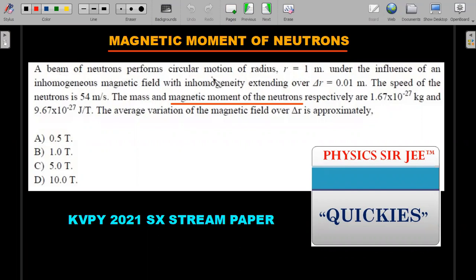A beam of neutrons performs circular motion of radius r is equal to one meter under the influence of an inhomogeneous magnetic field with inhomogeneity extending over a delta r value of 0.01 meters. The speed of neutrons is 54 meter per second. The mass and magnetic moment of neutrons are respectively provided. The average variation of this magnetic field over delta r is approximately in Tesla, you're supposed to mark the one of the four options. So here we go with the concept.